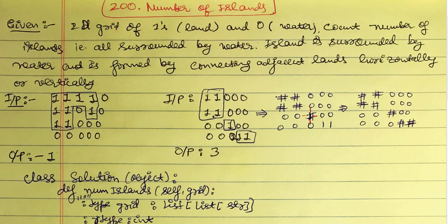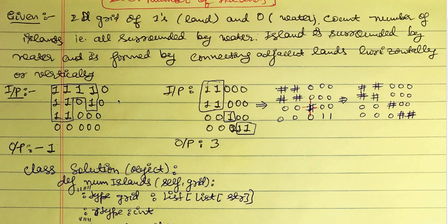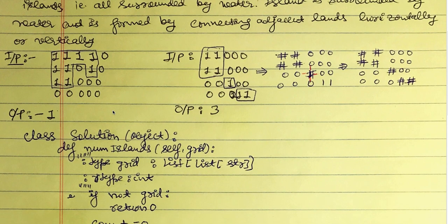Thank you for joining me for this problem. I will talk about LeetCode 200, which is the Number of Islands. We are given a 2D grid where ones represent land and zeros represent water, and we have to count the number of islands. An island is a piece of land surrounded by water, but it can only be formed by vertical or horizontal pieces of land — no diagonal connections.